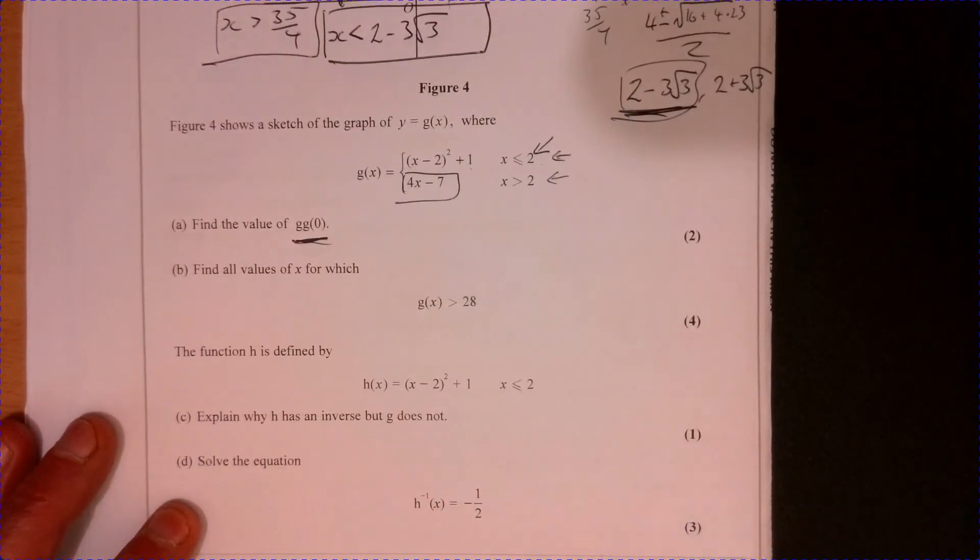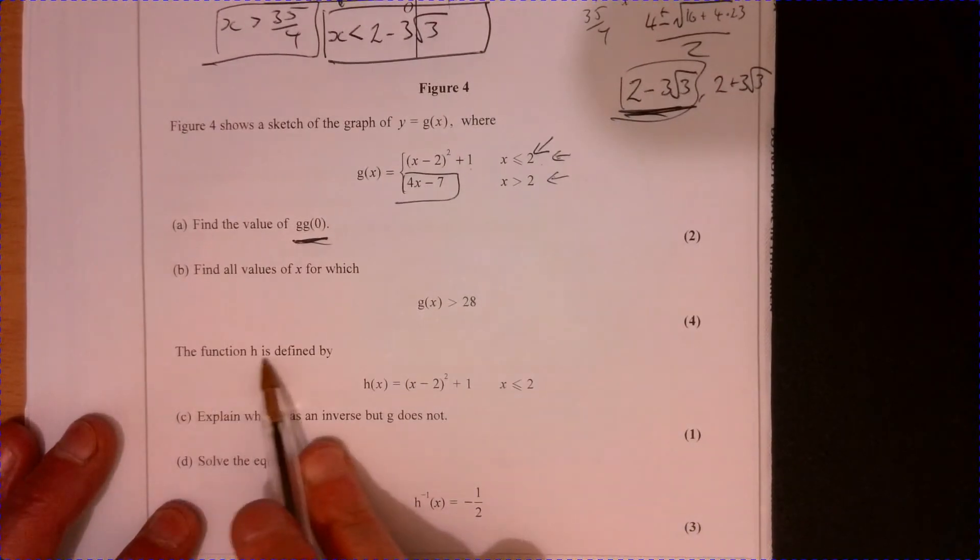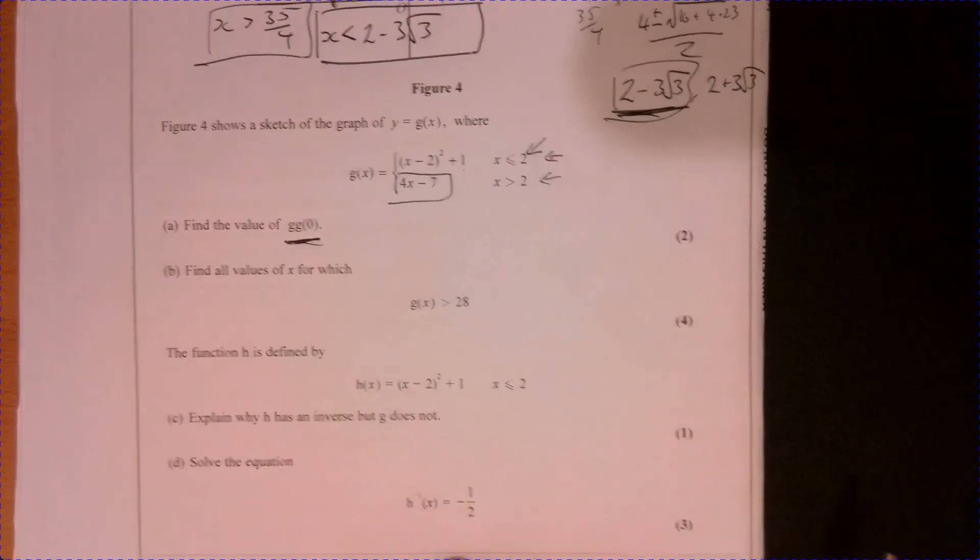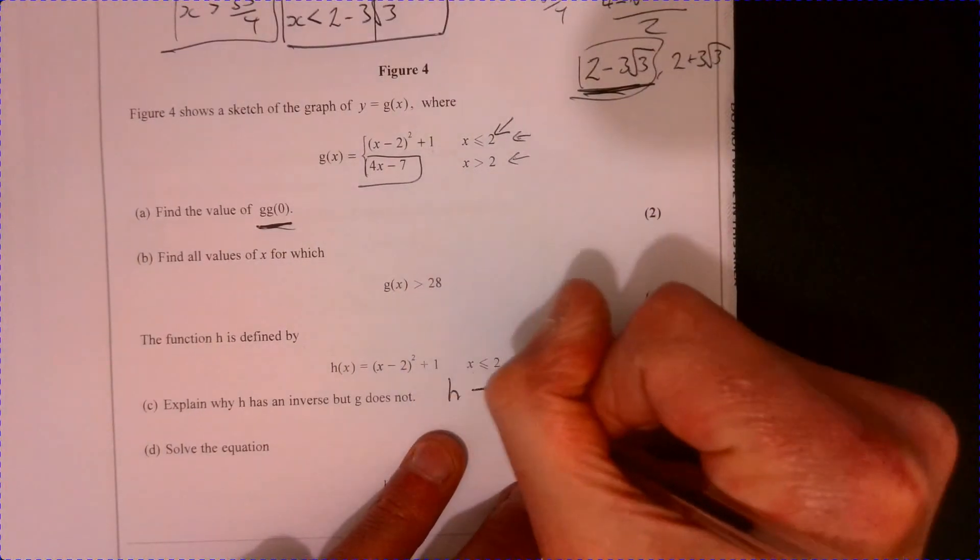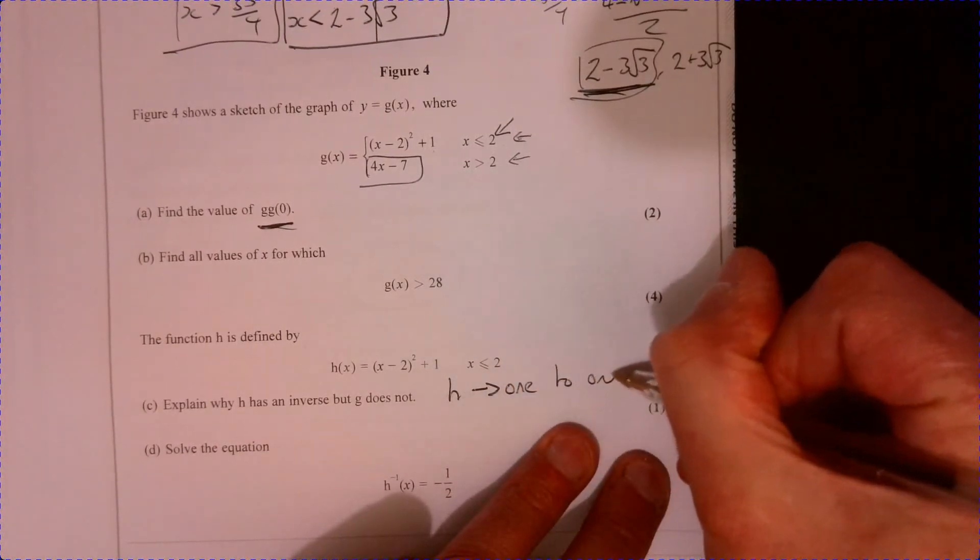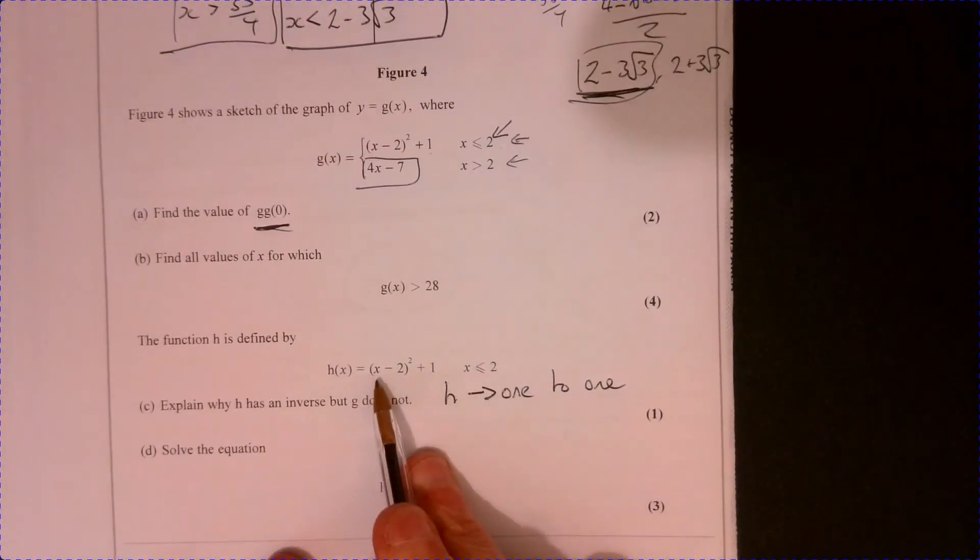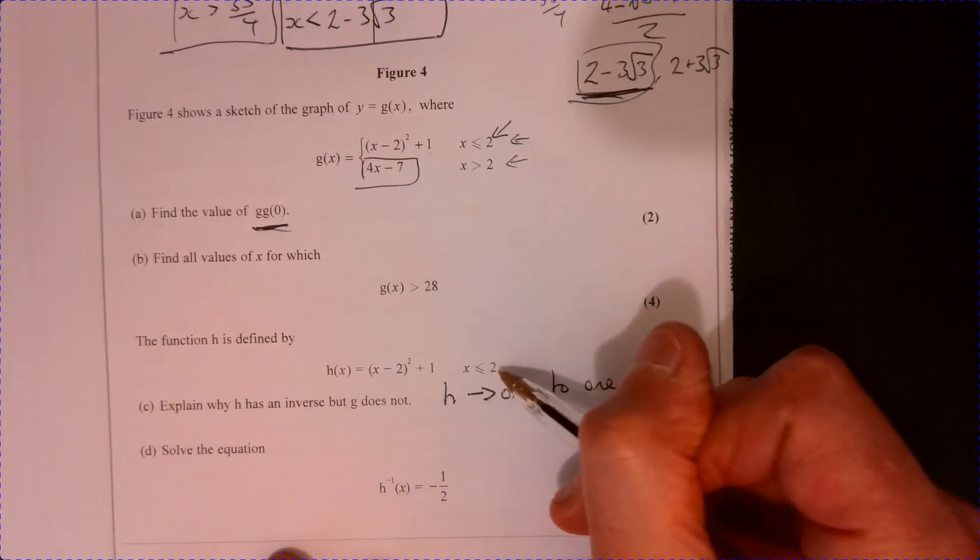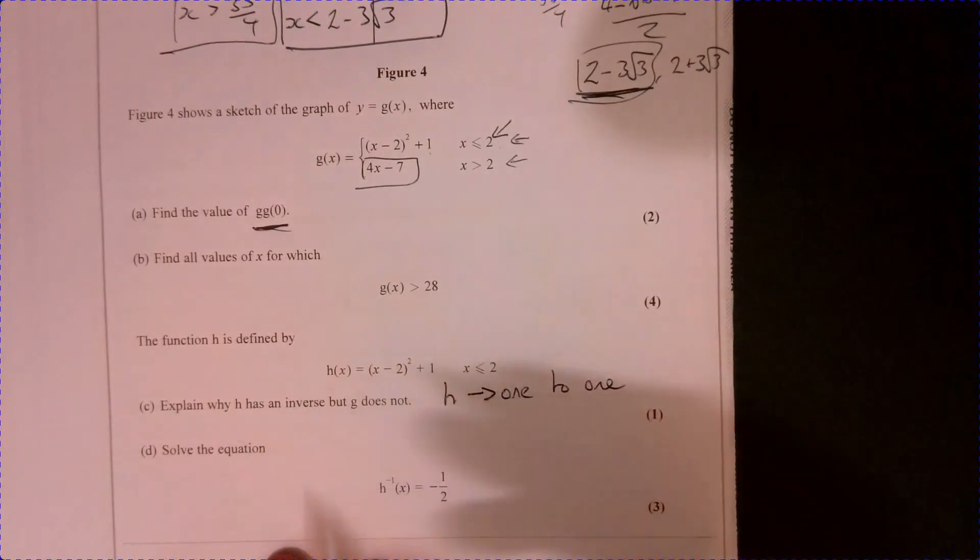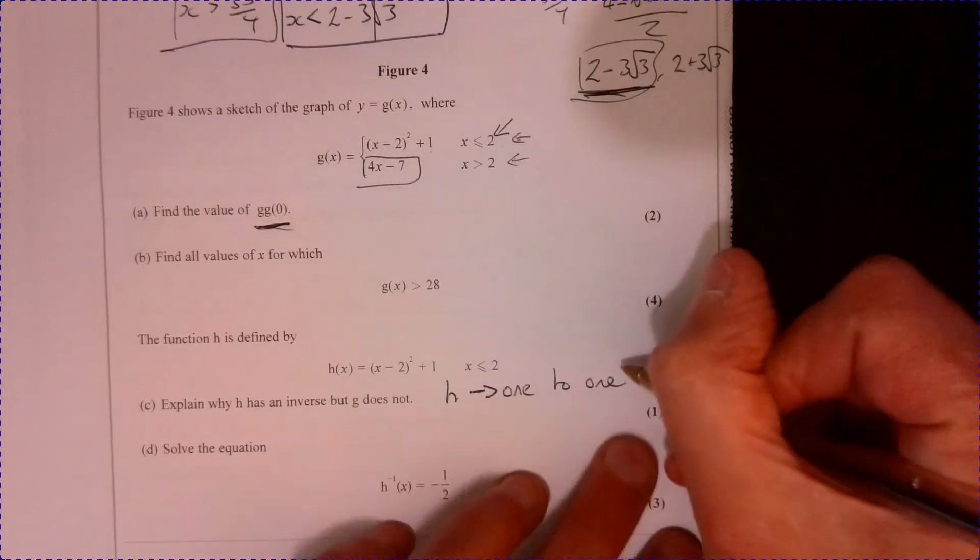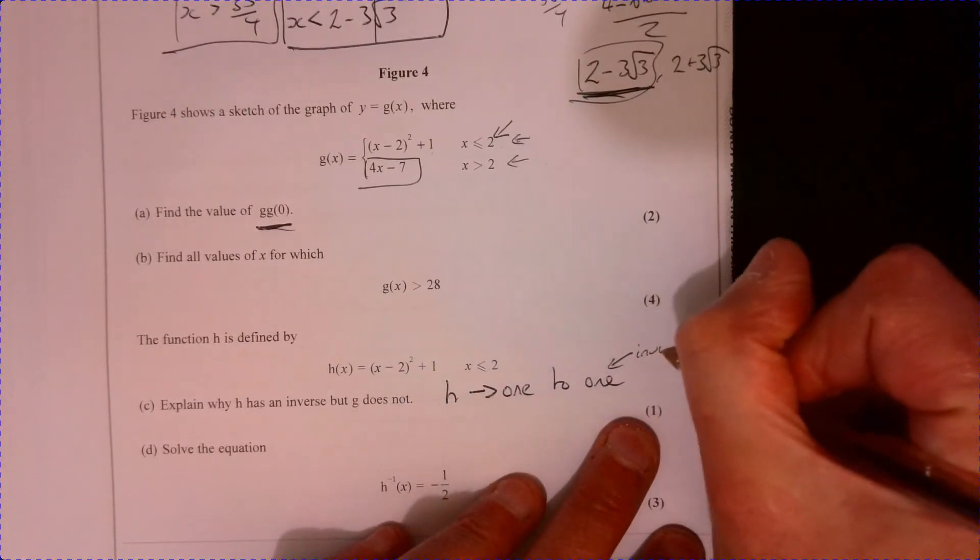So, okay, now going down and having a look and see what we've got down here. So the function h is defined by, so we've got some function h. Explain why h has an inverse, but g does not. Well, we can see here that, first of all, so h is a one-to-one function, okay? Each value that goes into this, just because we're only looking at these ones here when x is less than or equal to 2, each one that goes in is going to give us a unique answer. So, therefore, it's got an inverse. So that does have an inverse.